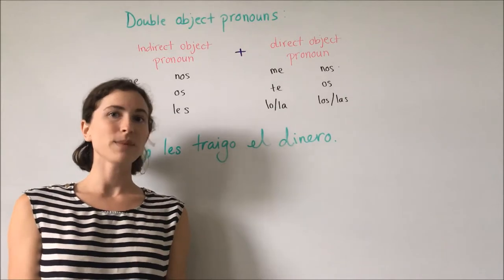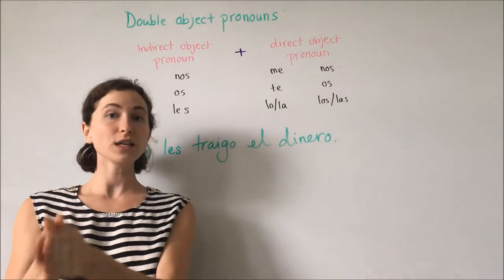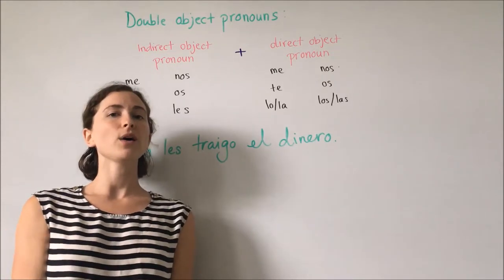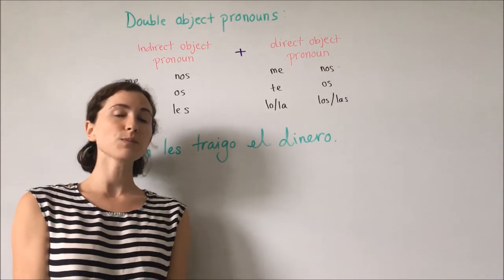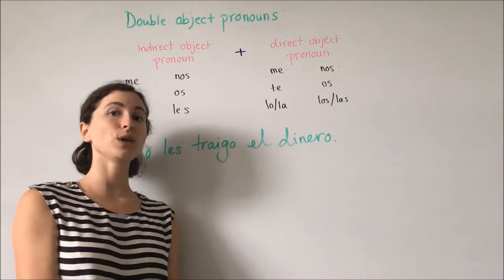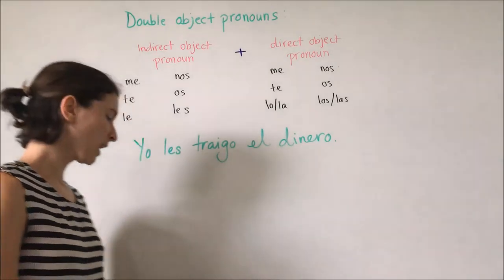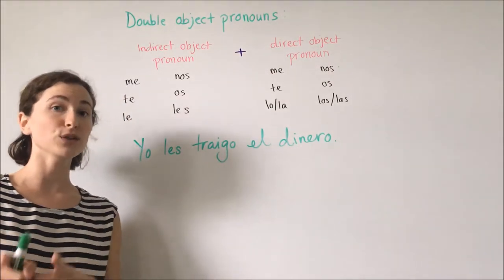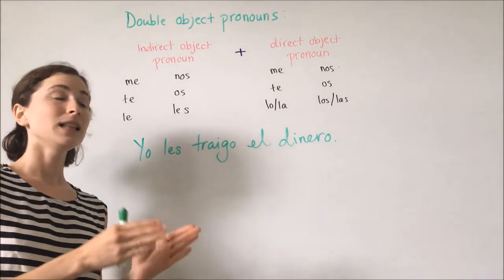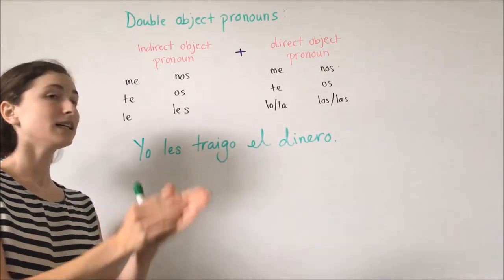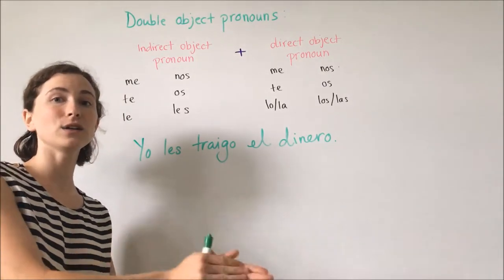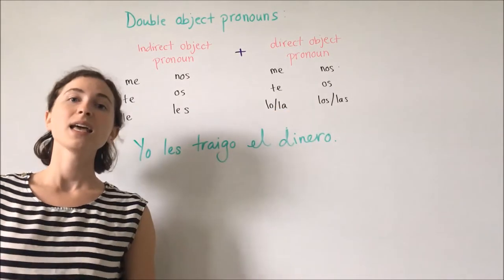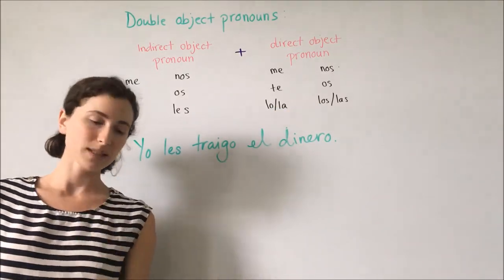Now that we have talked about the invariable order of indirect object pronoun then direct object pronoun, we need to talk about one special change that happens when using these two together. If we are talking about the third person in both direct and indirect — le, les, lo, la, los, las — if we have one of each from this group, there is a change that happens.